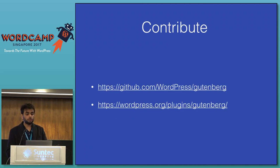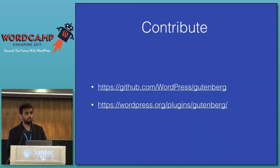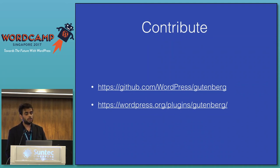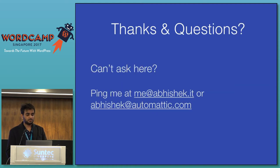We are open to contributions. You can just go to github.com/WordPress/Gutenberg. You can see it in beta, and if you want to download and try it on your WordPress admin, you can go to the second link and try the beta version. That's mostly it — thank you. If you have any questions, just ask me here or by email.